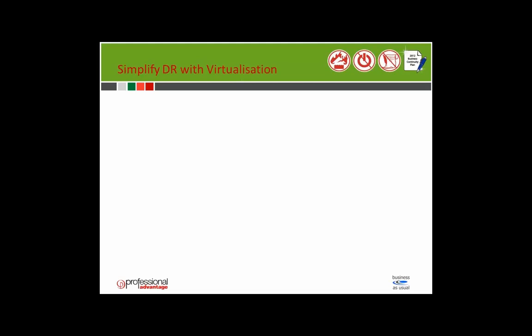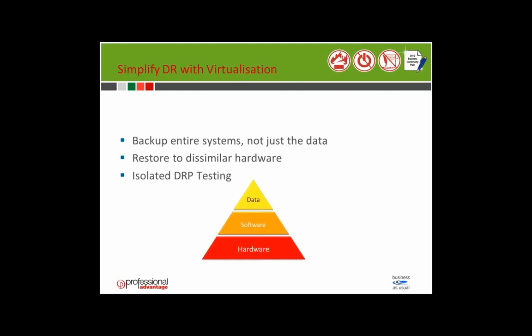Disaster recovery has really simplified and come to the masses. We can now back up entire systems, not just data. We can restore to dissimilar hardware — no need for an exact replica at the secondary site. Customers can have systems back up and running at a secondary site within four to six hours. Isolated DRP testing now means we can avoid after-hours testing or interrupting business systems — because systems are virtualised on the secondary environment, we can bring them up and test DR during normal production hours.